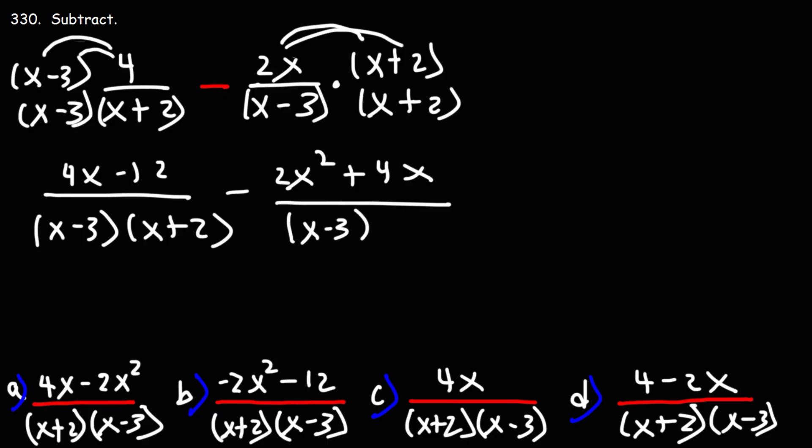So now that we have the same denominator, we can write this as a single fraction. On the left, we still have the 4x minus 12.